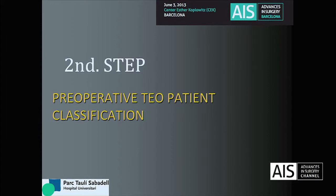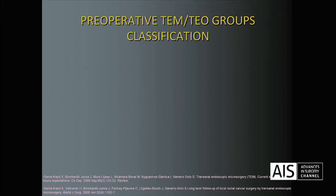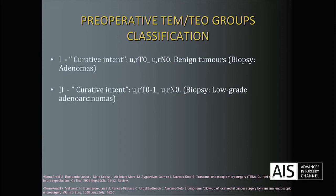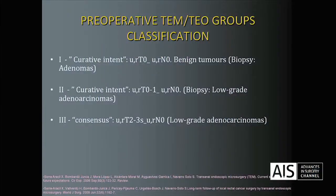The second step is the preoperative patient classification. We classify patients into Group 1, which is curative intent — benign tumors with biopsy of adenoma with imaging on ultrasound or MRI showing T0, N0. Group 2 is the most important for local surgery — biopsy of low-grade adenocarcinoma with imaging T0 or T1, N0. Group 3 is the consensus group, which is the most problematic — these are T2, superficial T3 or T3A, N0, low-grade adenocarcinoma.